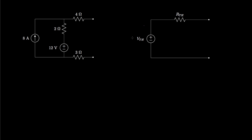Because the Thevenin circuit is much simpler than the original circuit, its use could be very helpful in analyzing the voltage and currents throughout the external circuit. However, if we're interested in any voltages or currents that are internal to the original circuit — say the voltage across the 2-ohm resistor — then the Thevenin equivalent circuit cannot be used.